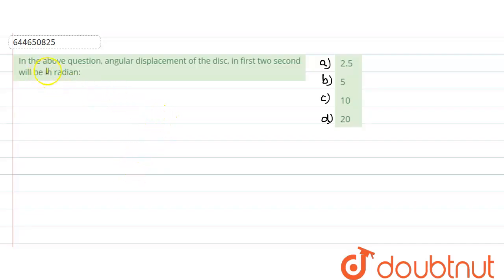In this question, what is given? In the above question, angular displacement of the disk in the first two seconds will be in radians. We need to tell the value. So what was the question? There was a disk and a tangential force along the circumference was applied.